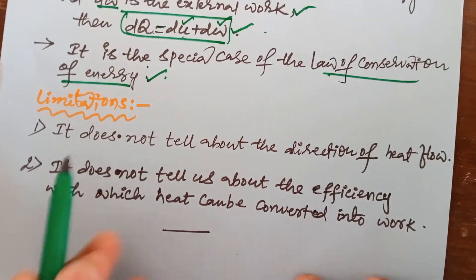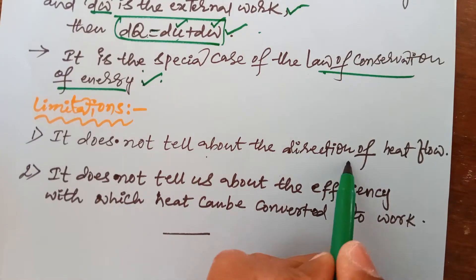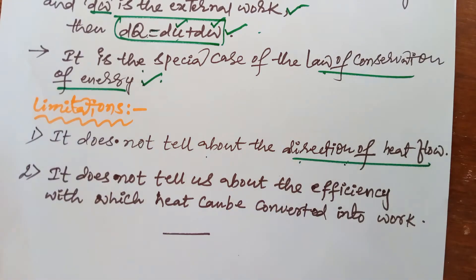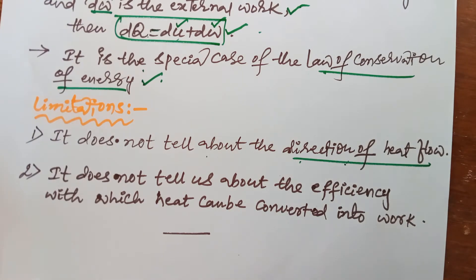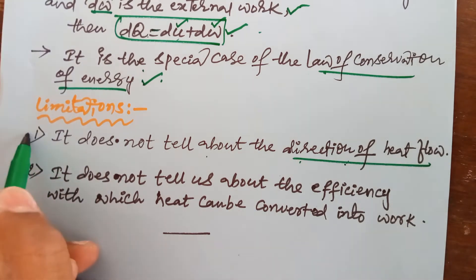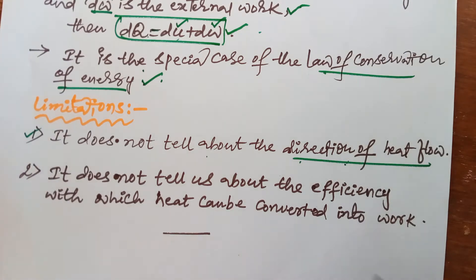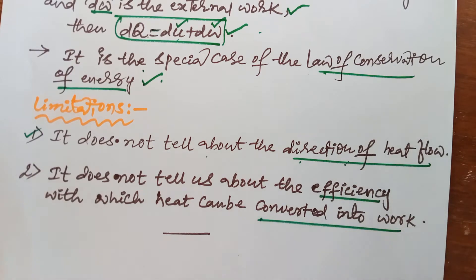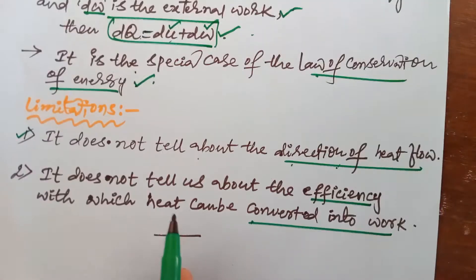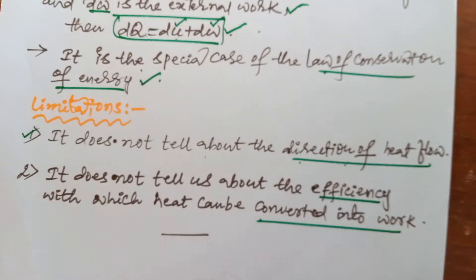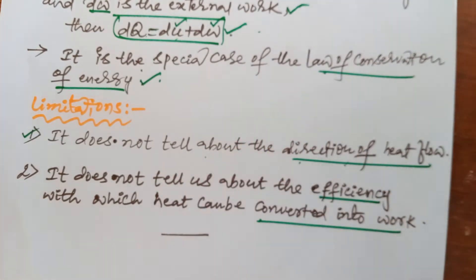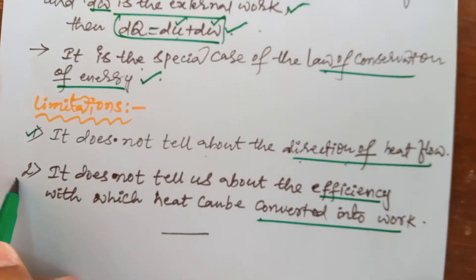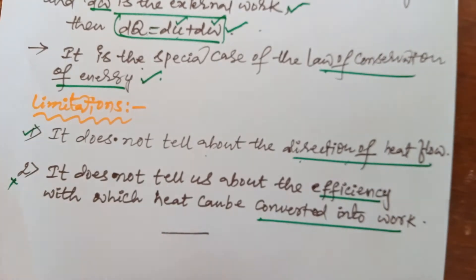What are the limitations? First, it does not tell about the direction of heat flow — we are giving heat to the system, but in which direction we are giving, we do not know. Second, it does not tell us about the efficiency with which heat can be converted into work. The total heat energy given to the system is not entirely converted into work; some energy is wasted. These are the limitations.